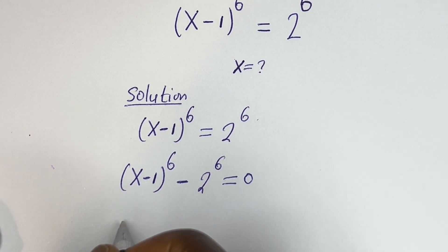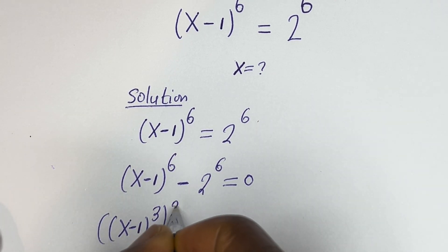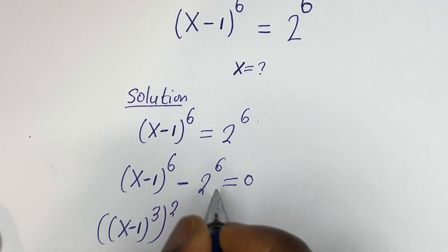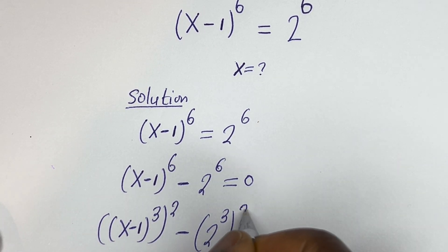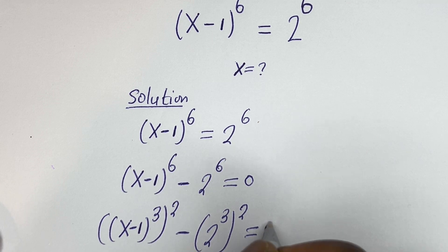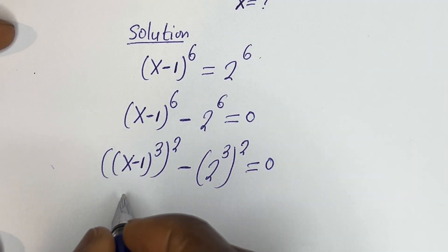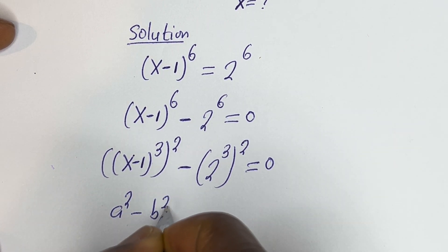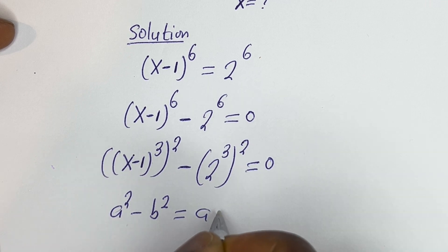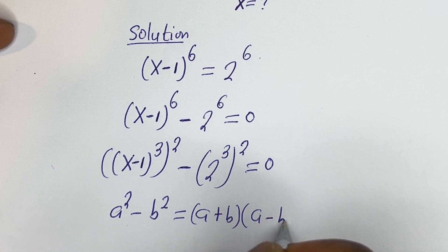Now this can be written as (x minus 1) to the power of 3, squared, minus 2 to the power of 3, squared, is equal to 0. Take note that if you have a squared minus b squared, this is equal to (a plus b)(a minus b).